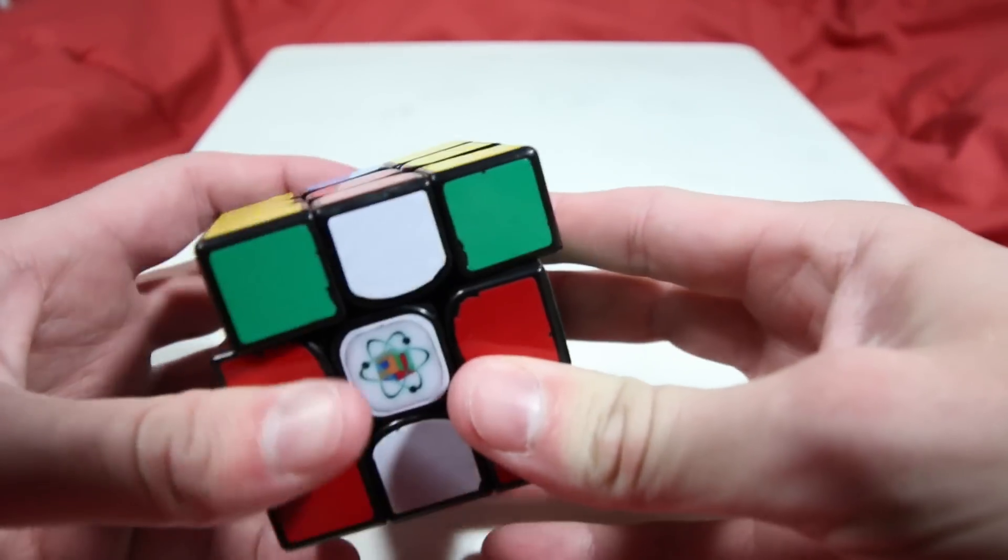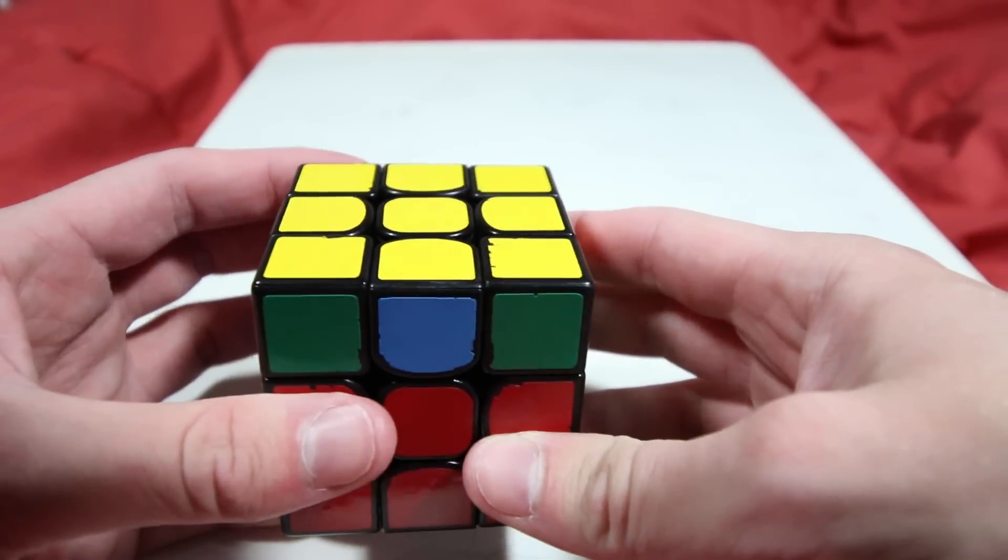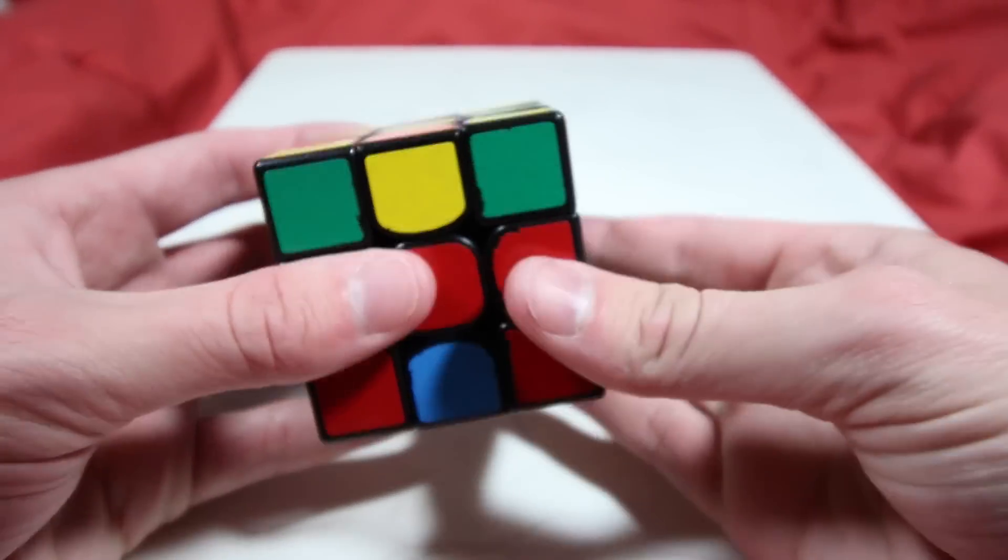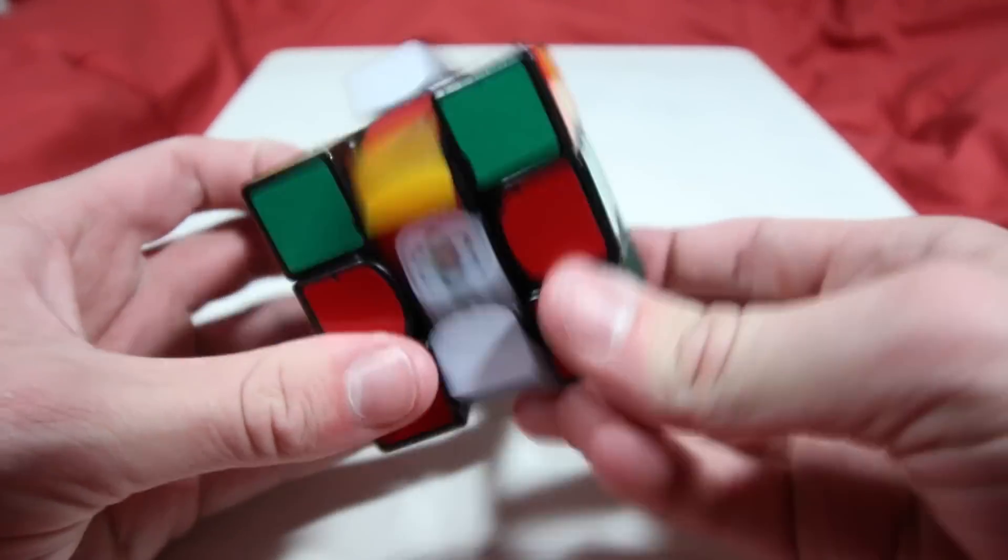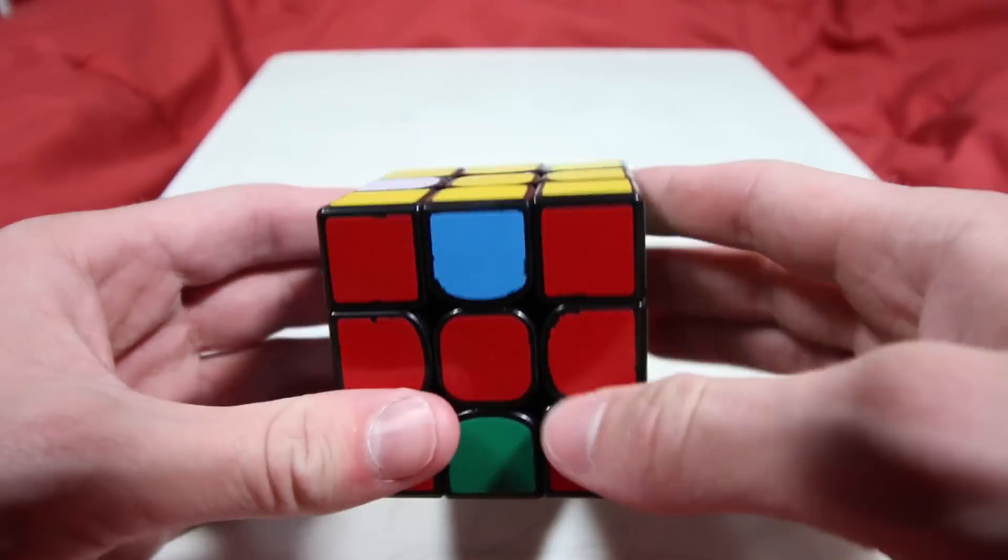You can use this to just reduce the cube to a state with four flipped edges. From here, you can either use the same technique to flip the remaining edges, or if they're all in the top layer, use M'U2M to insert one into the bottom layer, and that should be fairly intuitive how that works, and then use the technique to solve them as usual.